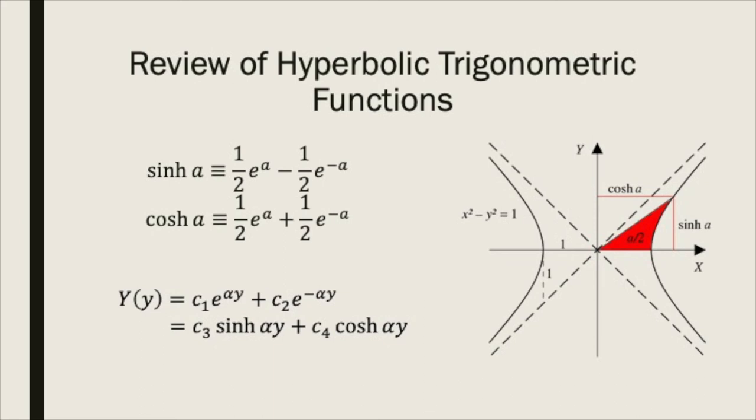The hyperbolic sine of a value a is equal to half of e to the a minus e to the minus a. The hyperbolic cosine is equal to one-half of e to the a plus e to the minus a.